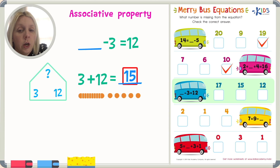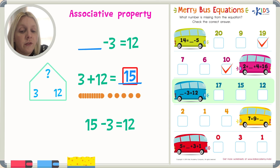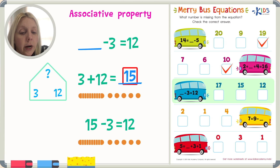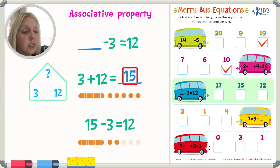Plug it back into the original: fifteen minus three equals twelve. If it makes sense, then fifteen is our correct answer. I've got one column of ten and five units of one, minus three, which leaves me with ten, eleven, twelve. That's correct — the number I came up with — so I know that fifteen is my correct answer.